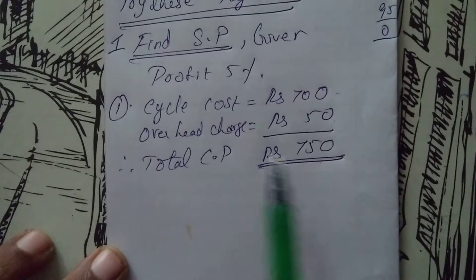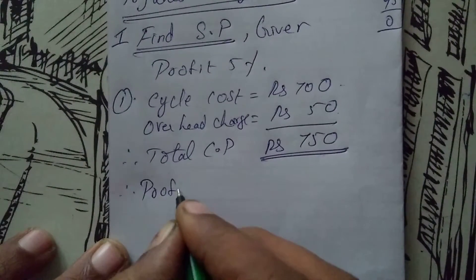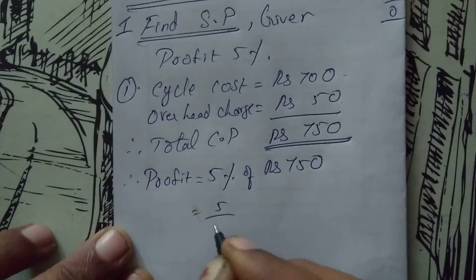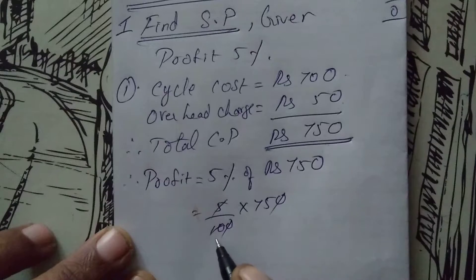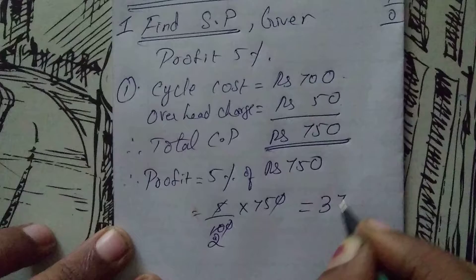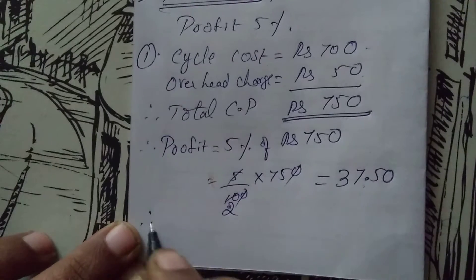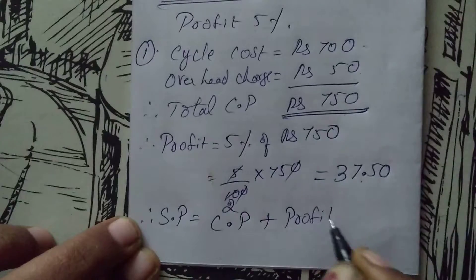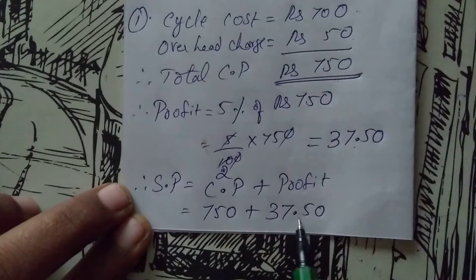For this total cost price, profit 5% — how much do we find? Profit equals 5% of rupees 750, that is 5/100 into 750. The zeros get cancelled; 5 goes into 10 twice. Then 2 goes into 75 giving rupees 37.50. So profit is rupees 37.50.